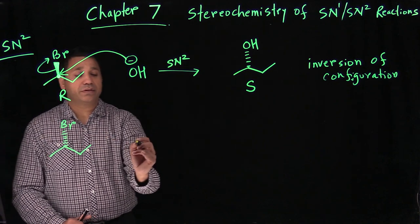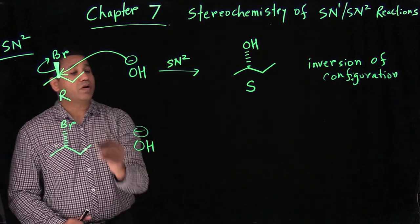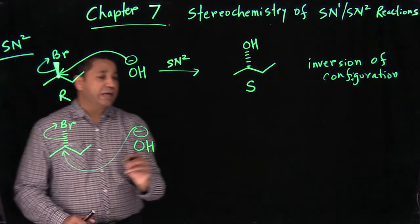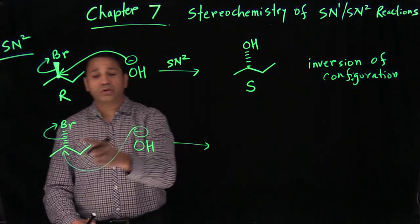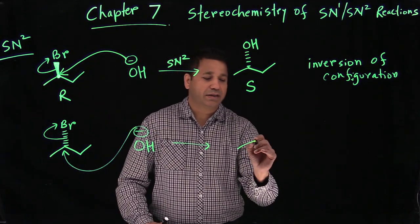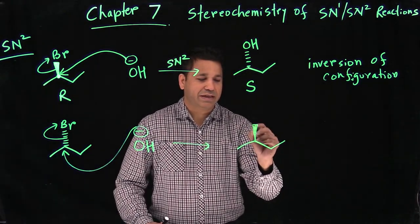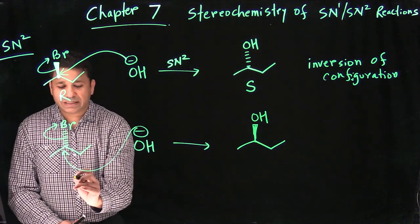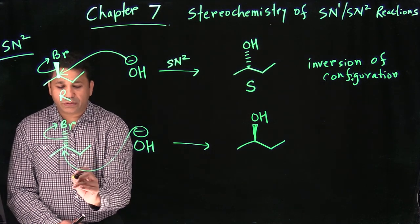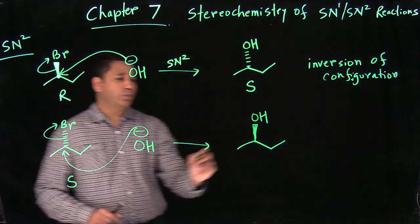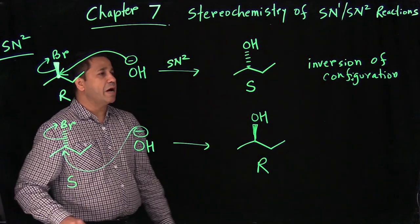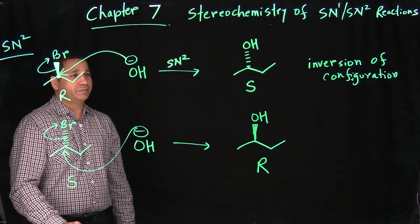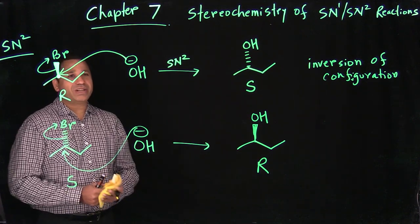You could also have the bromine at the back side. If the leaving group is at the back, then the nucleophile has to come from the front. When the nucleophile attacks from the front, the priority order one, two, three gives S — still the exactly opposite configuration to the starting material. So in both cases, SN2 always gives inversion of configuration.